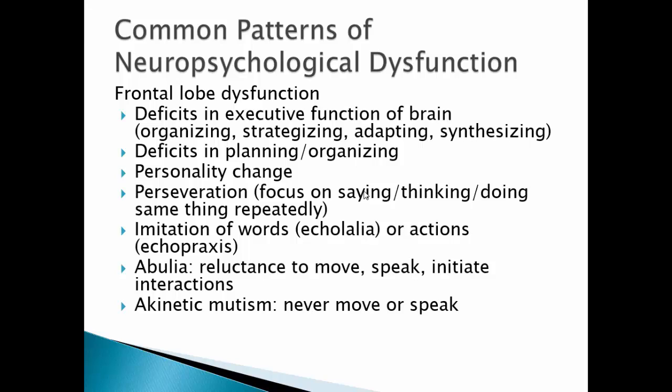Frontal lobe dysfunction can result in deficits in executive function — things like organizing, strategizing, adapting, and synthesizing — as well as deficits in planning and organizing, and personality changes. It can cause perseveration, which is a focus on saying, thinking, or doing the same thing repeatedly. Other symptoms include echolalia (imitation of words), echopraxia (imitation of others' actions), abolia (reluctance to speak, move, or initiate interactions), and akinetic mutism, meaning the person never moves or speaks.